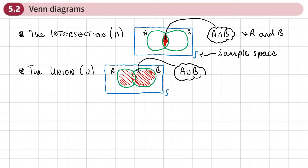Secondly, we're going to move on to something called the union. Union is the contents of all of A and all of B, and we write it like this: A union B. Or we could think of this as A or B.